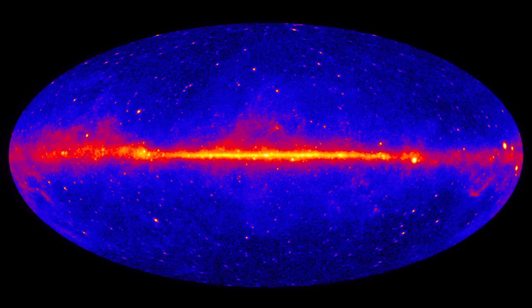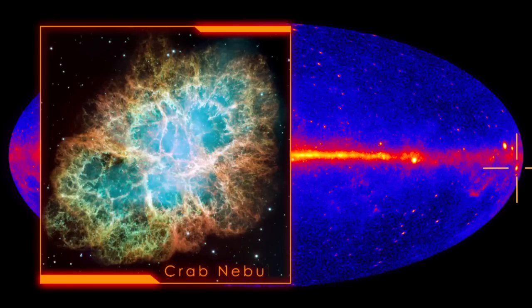Here's what the sky looks like in high-energy gamma rays. The pulsar in the Crab Nebula is among the brightest sources.